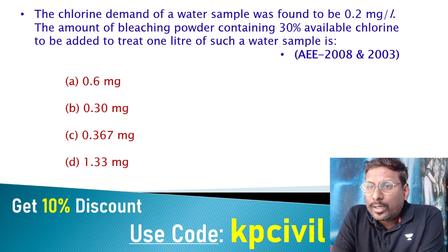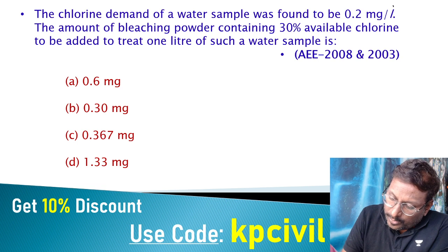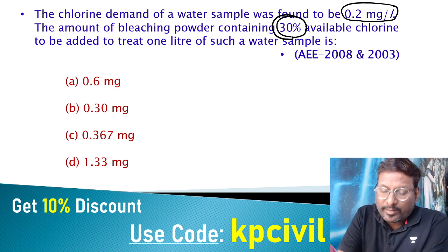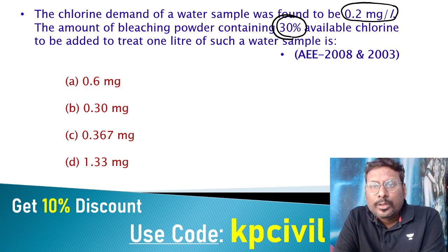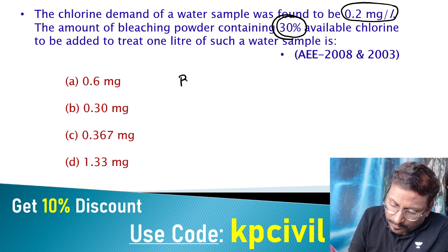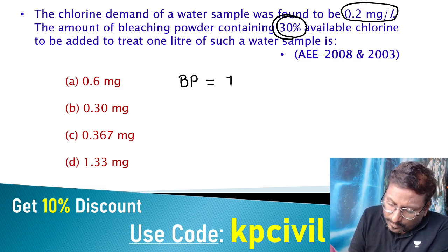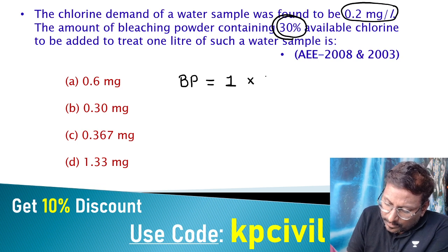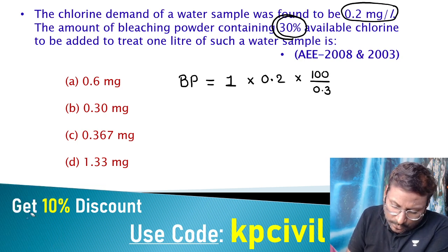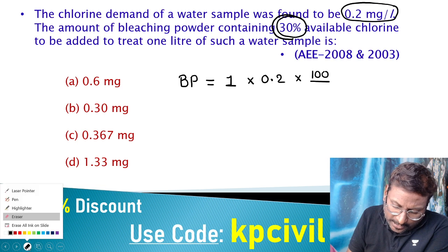Revisiting the calculation: chlorine demand = 0.2 mg/L. Amount of bleaching powder containing 30% available chlorine to treat one liter = 1 × 0.2 × 100/30 = 0.2/0.3 ≈ 0.67 mg.